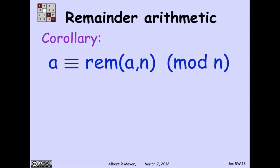Another simple consequence of the remainder theorem is a little technical result that's enormously useful called the remainder lemma, which says simply that a number is congruent to its own remainder, modulo n. The proof is easy.